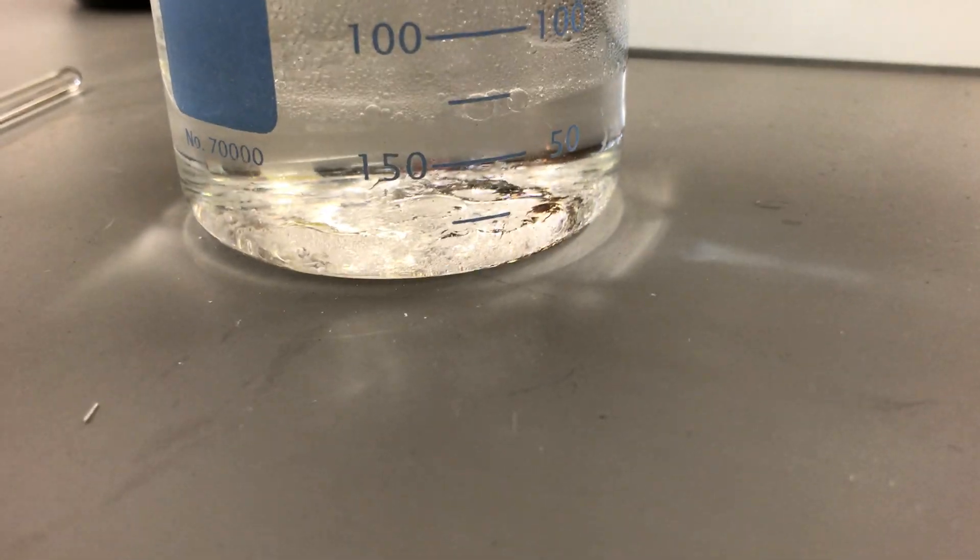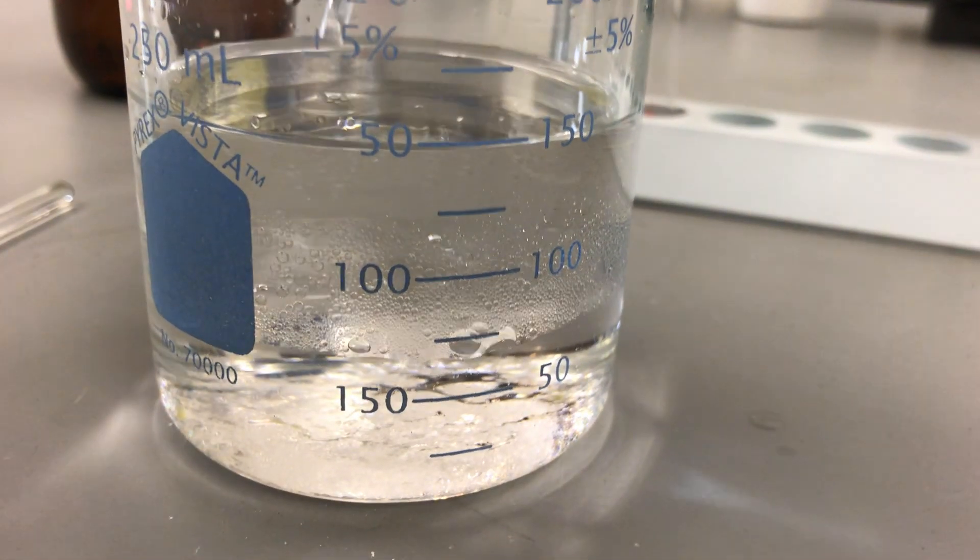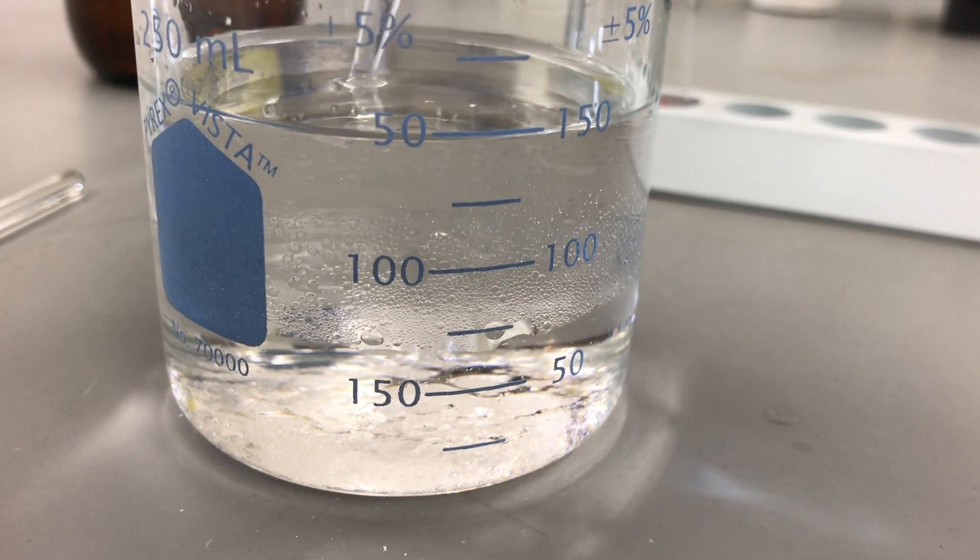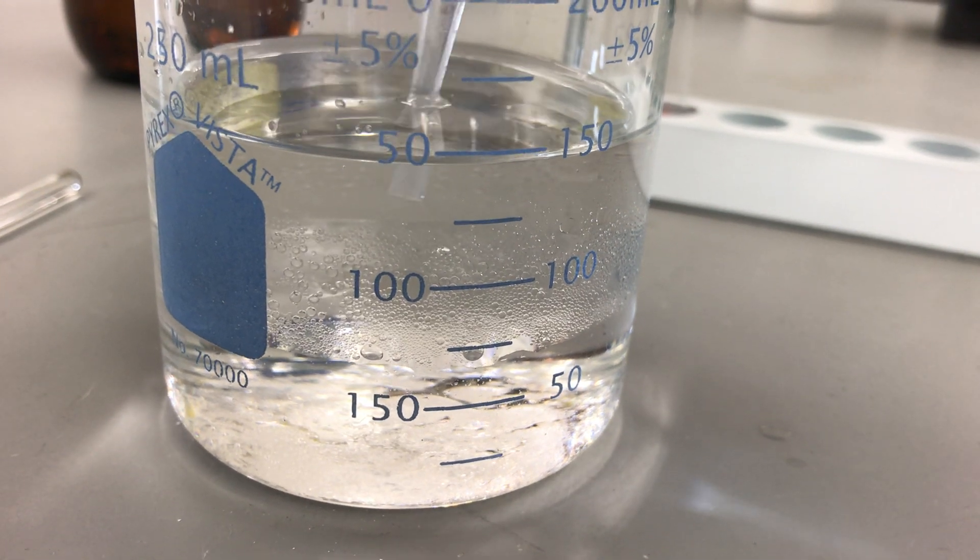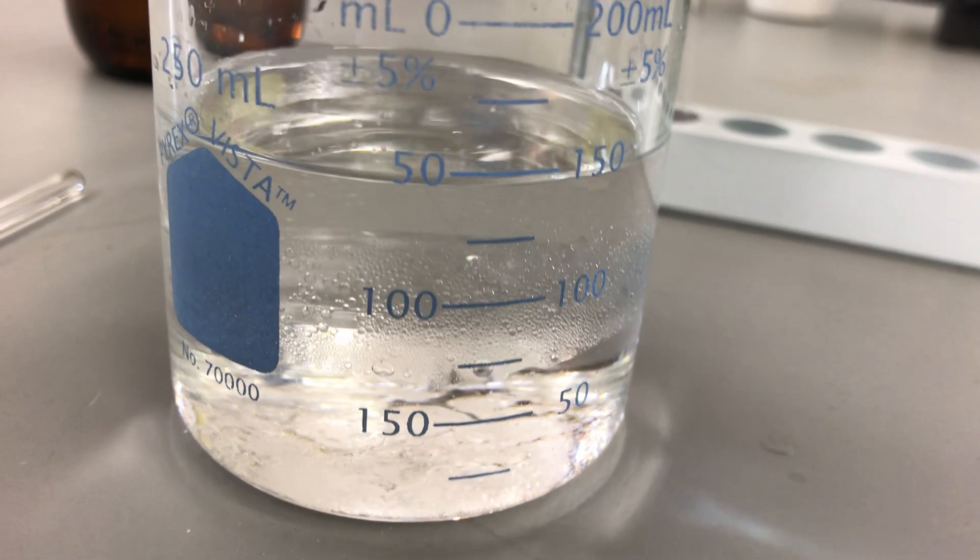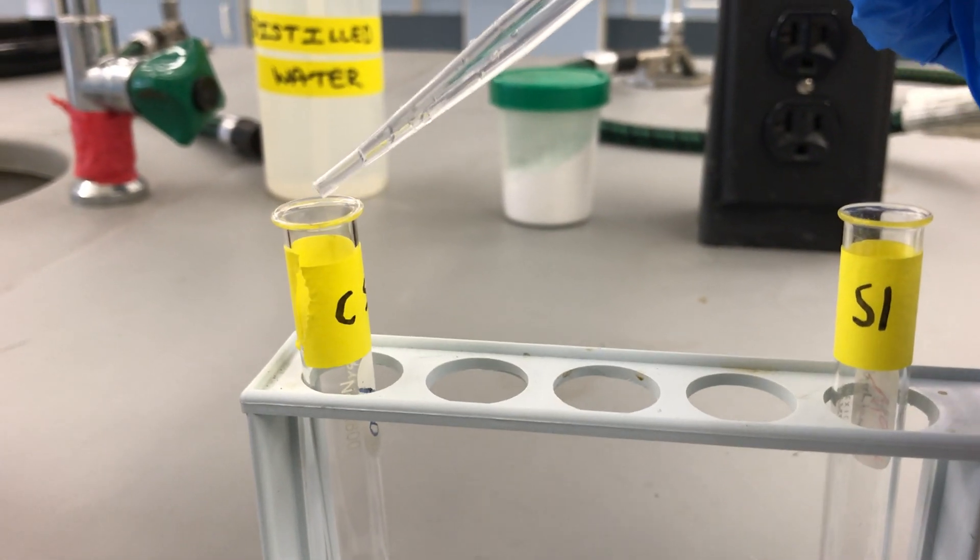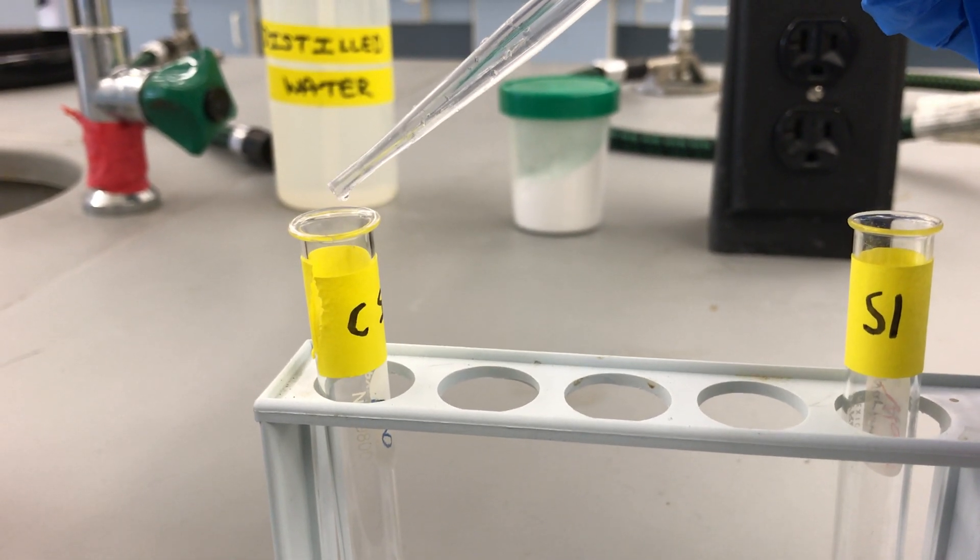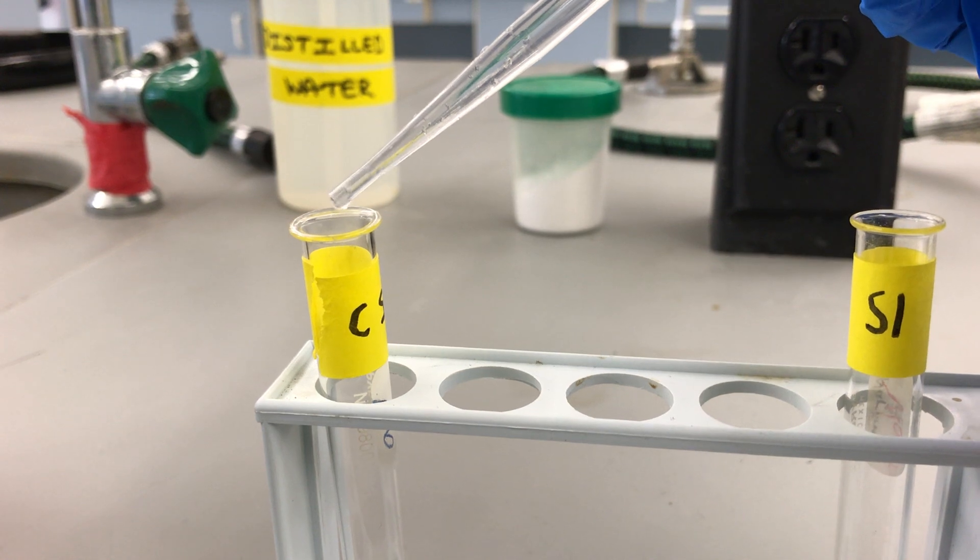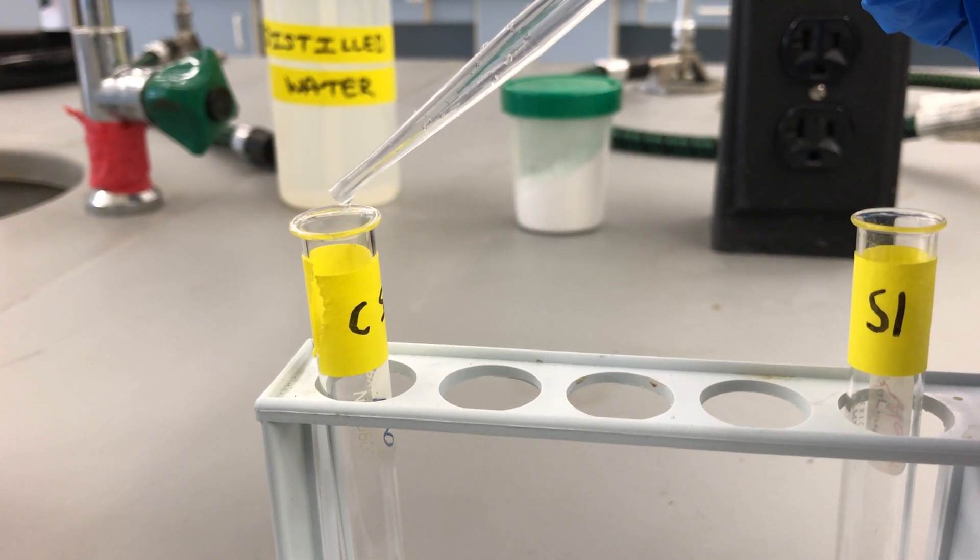So, once again, squeeze the bulb of your pipette, insert it into the upper layer, and suck some of it up. And, once again, about seven drops into each test tube. So, one, two, three, four, five, six, seven.